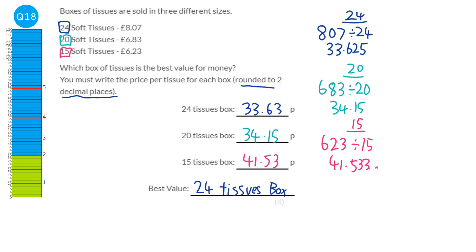There's such a thing as buying in bulk — generally the more you buy the cheaper it is — but don't rely on that in the exam or in real life. Sometimes buying more is actually more expensive per item, especially if there's a special offer on the smaller box.